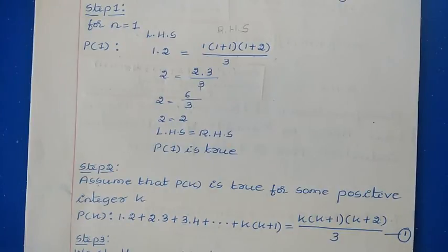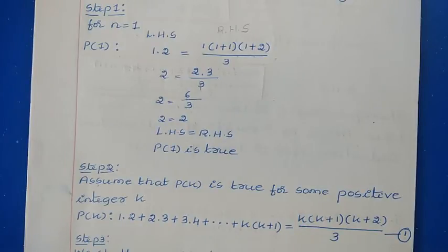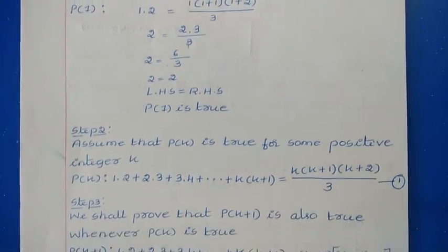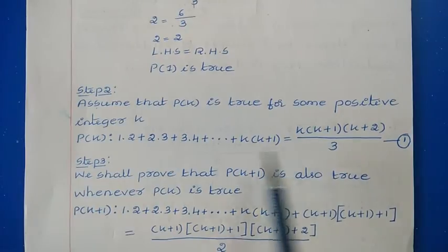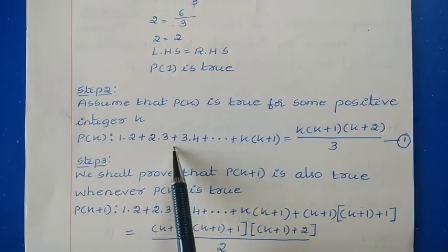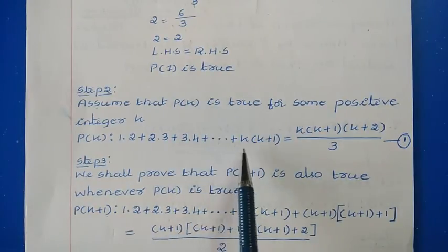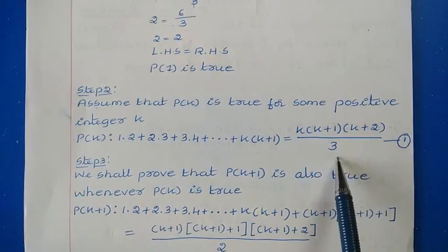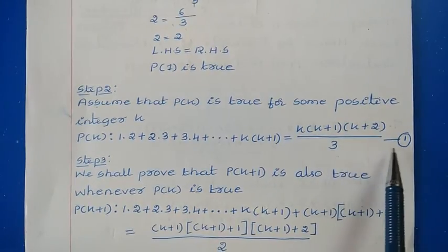The second step is checking the statement for some positive integer k. We assume the statement is true for some positive integer k, that is P(k). Replacing n with k, we get: 1×2 + 2×3 + 3×4 + ... + k(k+1) = k(k+1)(k+2)/3. Let us call this statement 1.